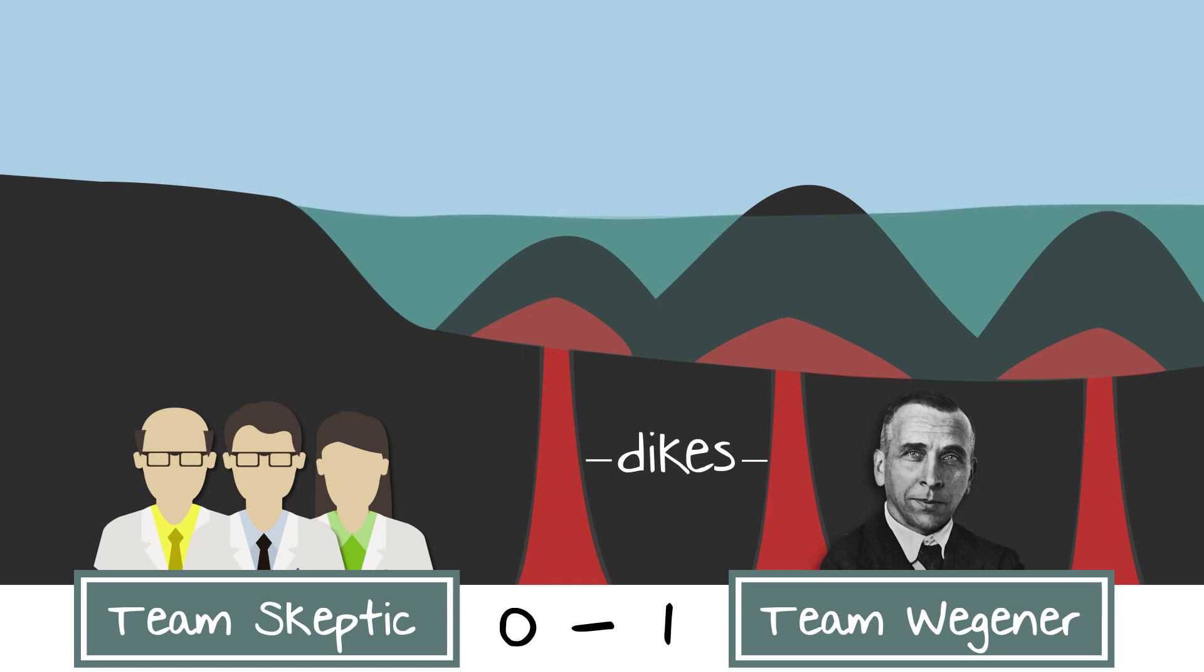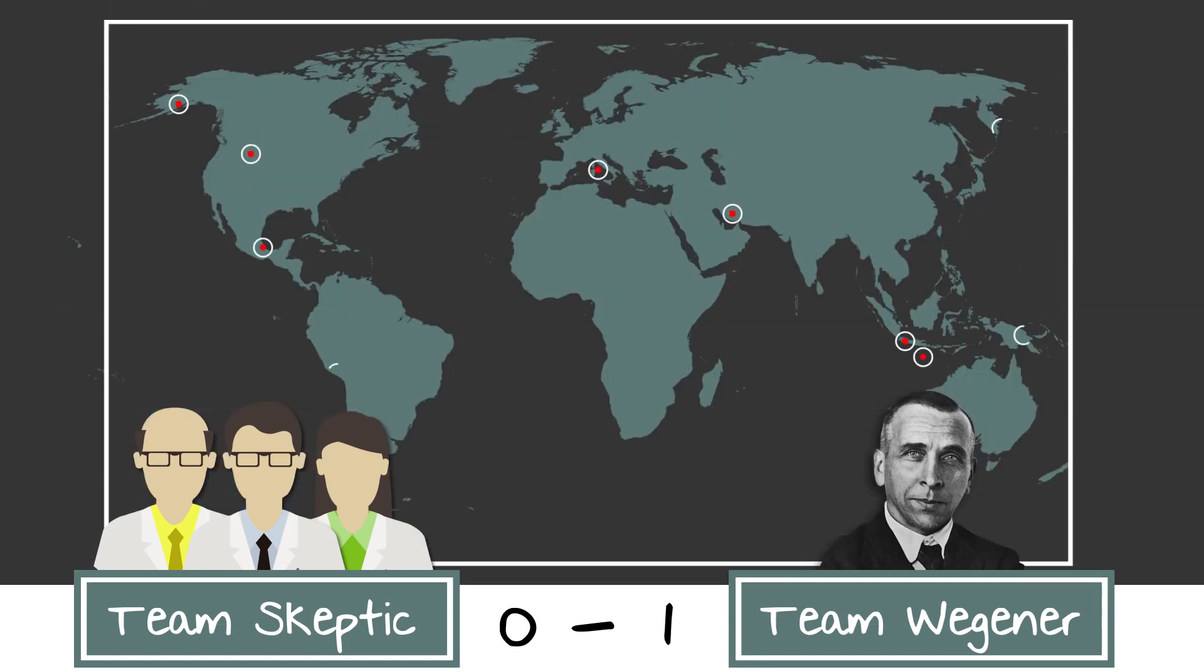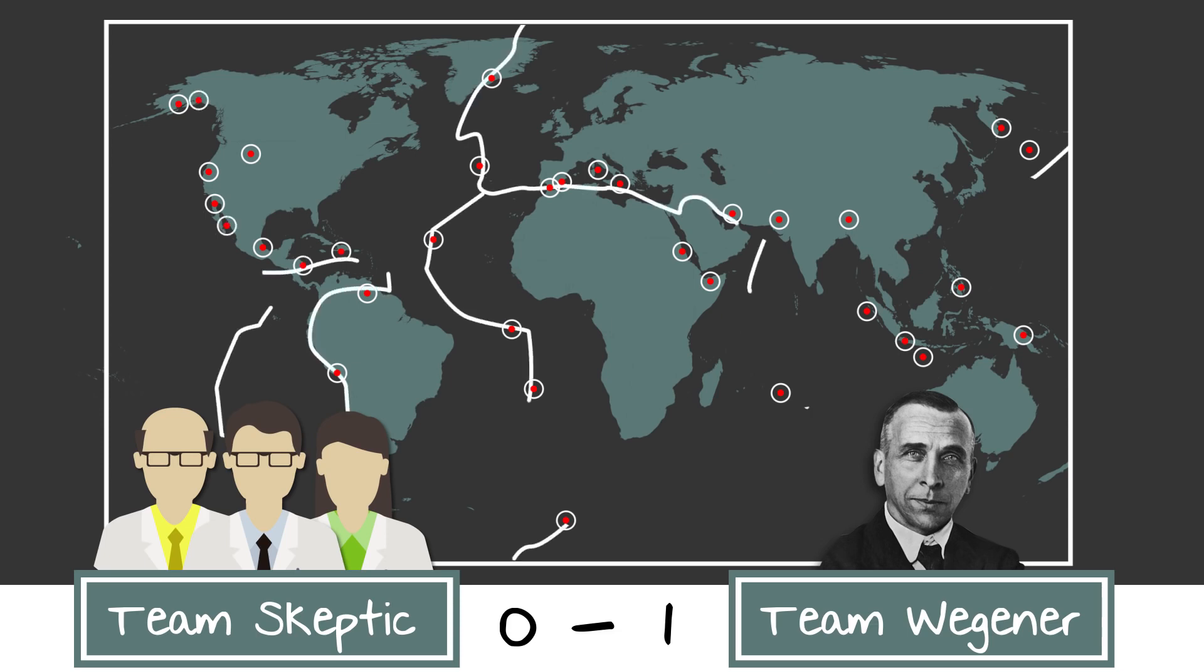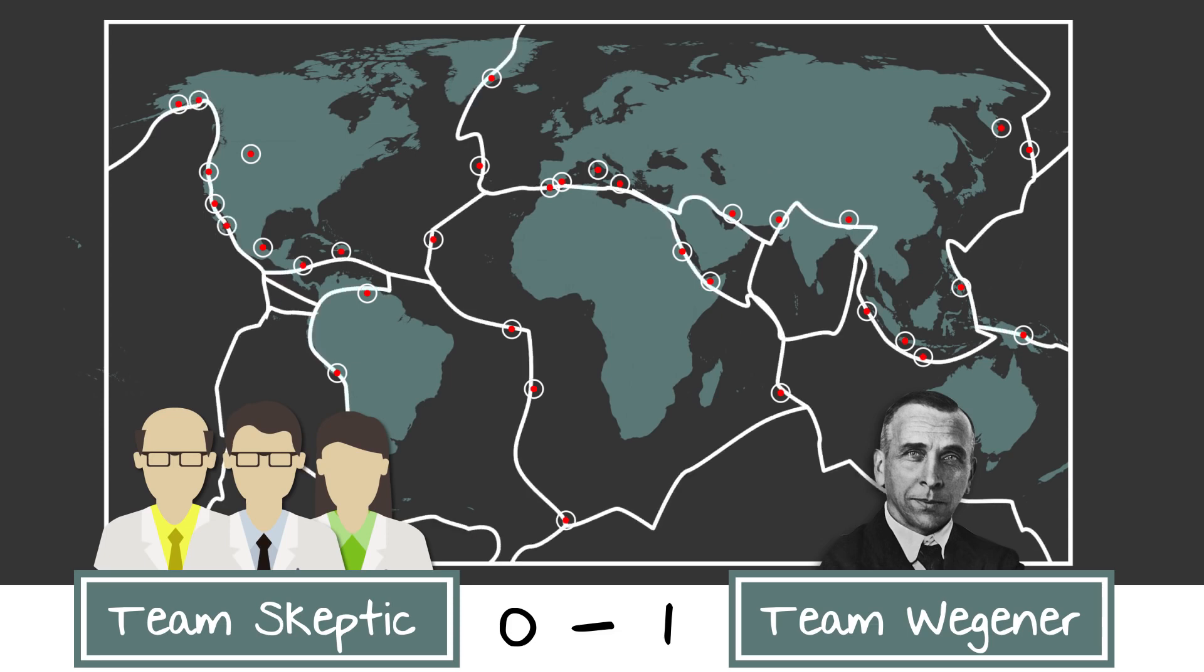Point Wegener. Not long after, scientists started plotting the location of earthquakes and volcanoes around the world, and observed that the location of those events followed a similar pattern to the outline of the plates Wegener proposed.